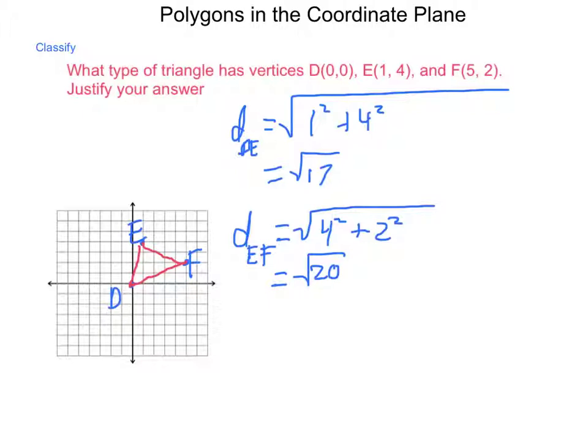So, we have two different side lengths. That rules out an equilateral. Let's see what we can find if we have isosceles or scalene. Next, I need the distance of DF. And that is equal to, from 0 in my X to 5 in my X, that's a distance of 5. So, we have 5 squared. And then, for the Y's, 0 to 2 is a distance of 2. Square those and add them together. We have 25 plus 4, which is 29.